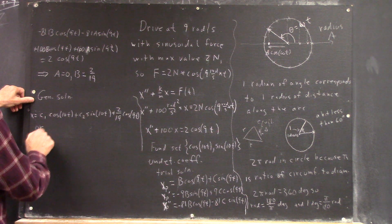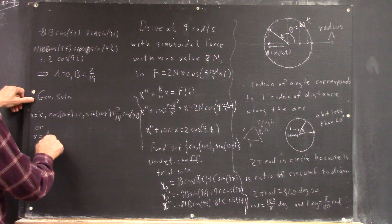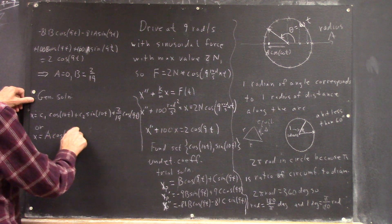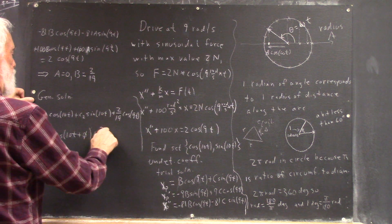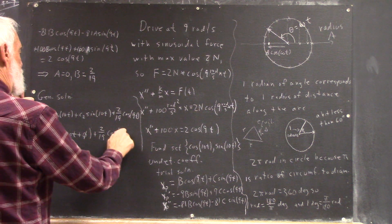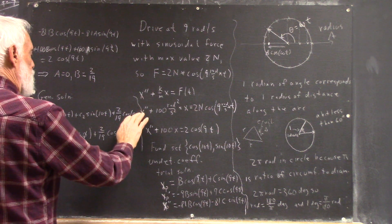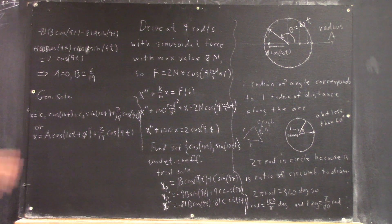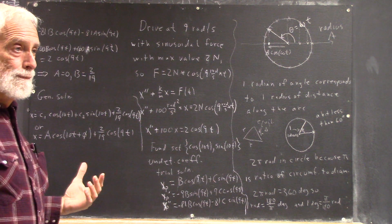Or, x equals a cosine of 10t plus phi, plus 2/19ths cosine of 9t.